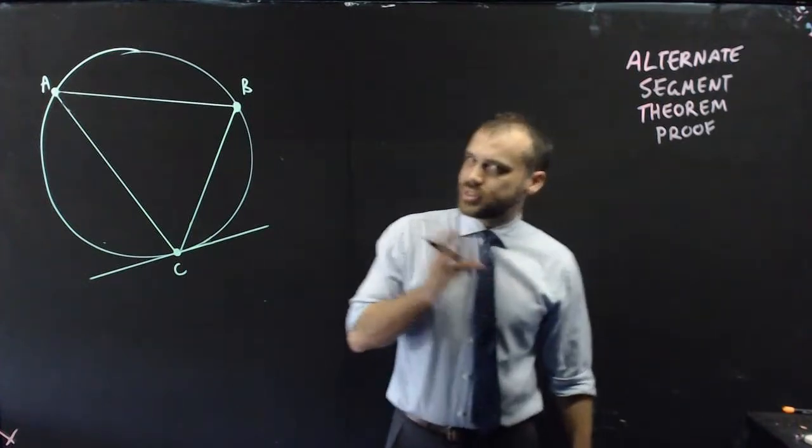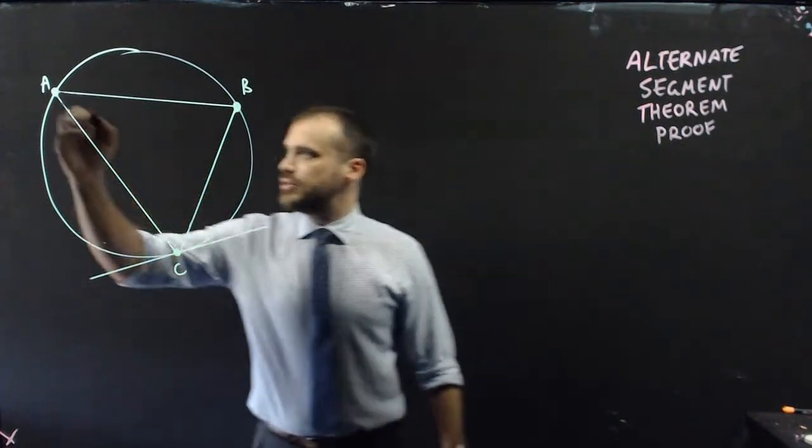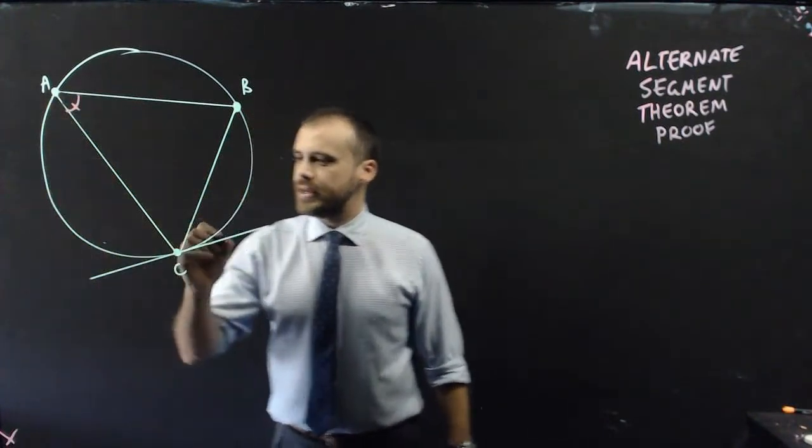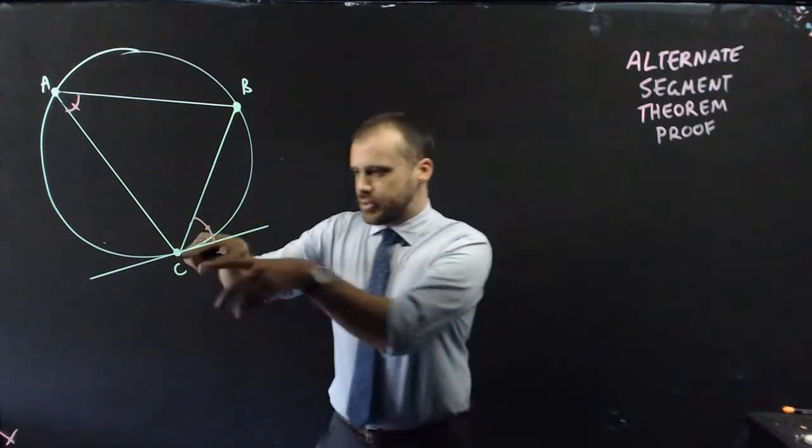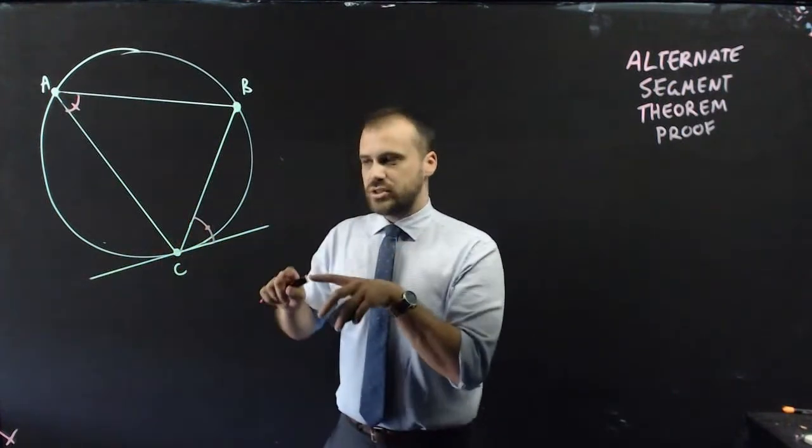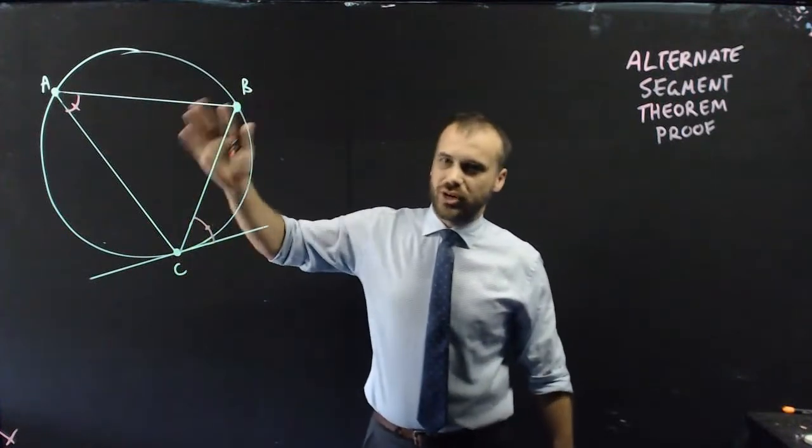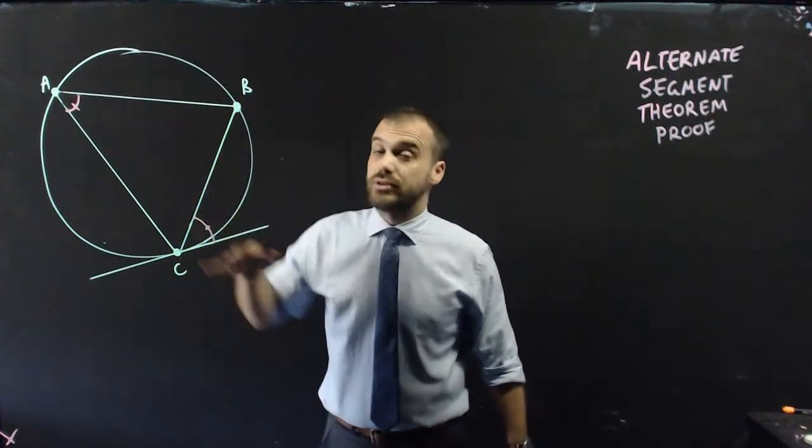We're looking at the alternate segment theorem, and it says that this angle here is equal to this angle here. Now it's important to note that this is a tangent to the circle, and this is just a triangle through any three points.